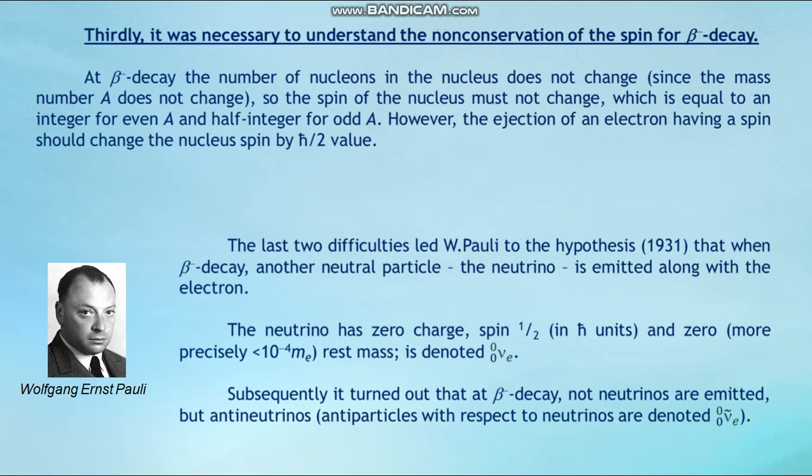The last two difficulties led Wolfgang Pauli in 1931 to hypothesize that during beta minus decay, another neutral particle — the neutrino — is emitted along with the electron. The neutrino has zero charge, spin equal to one-half (in ℏ units), and zero — or more precisely, less than 10⁻⁴ times m_e — rest mass. Subsequently it turned out that in beta minus decay, not neutrinos but anti-neutrinos (antiparticles with respect to neutrinos) are emitted.